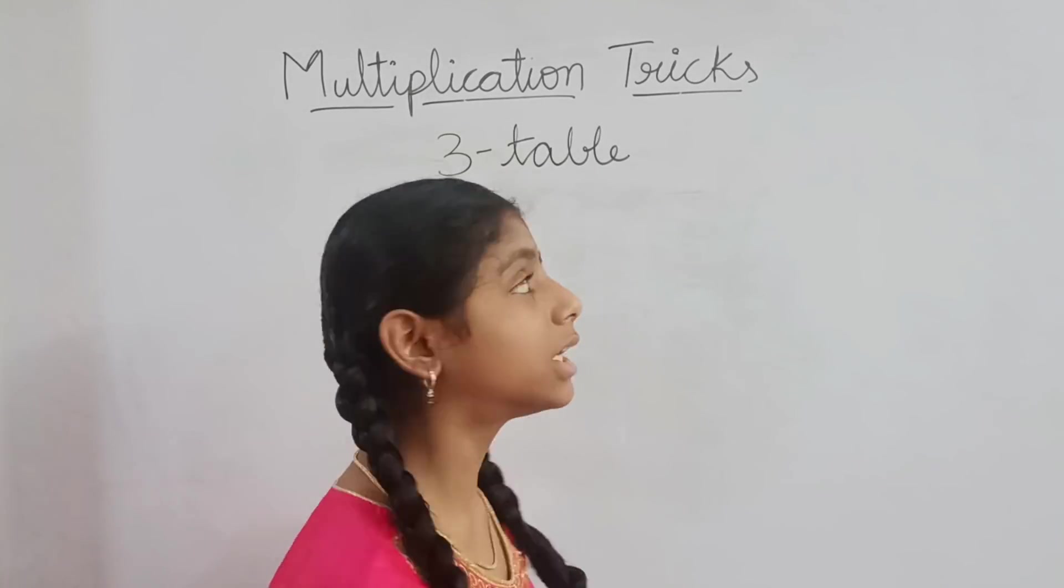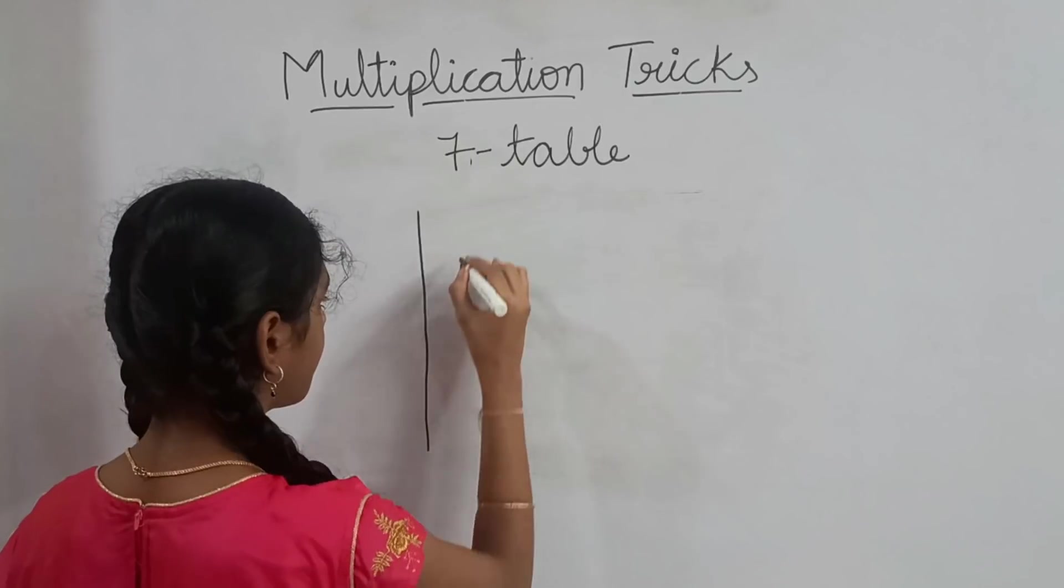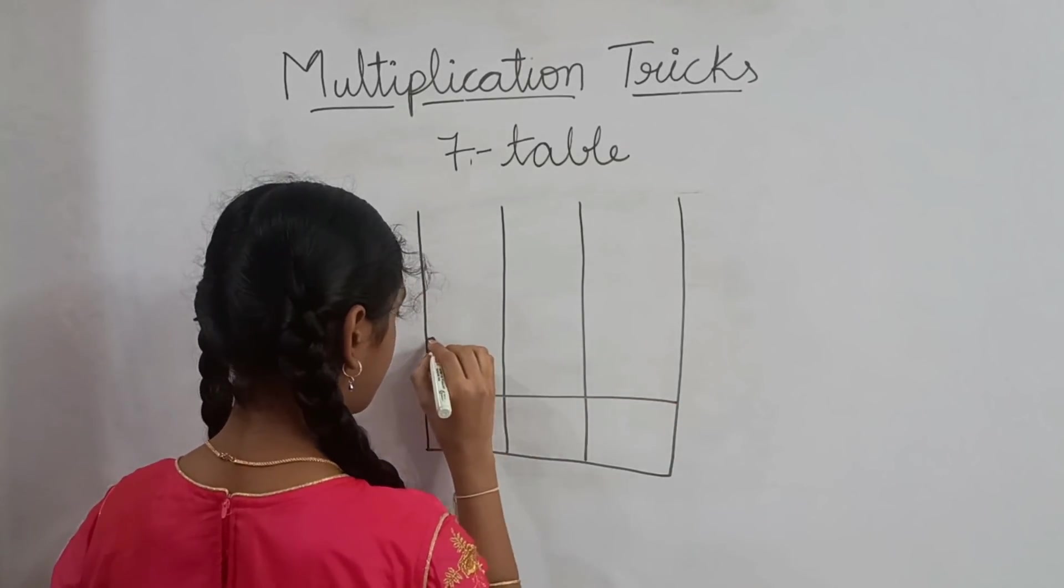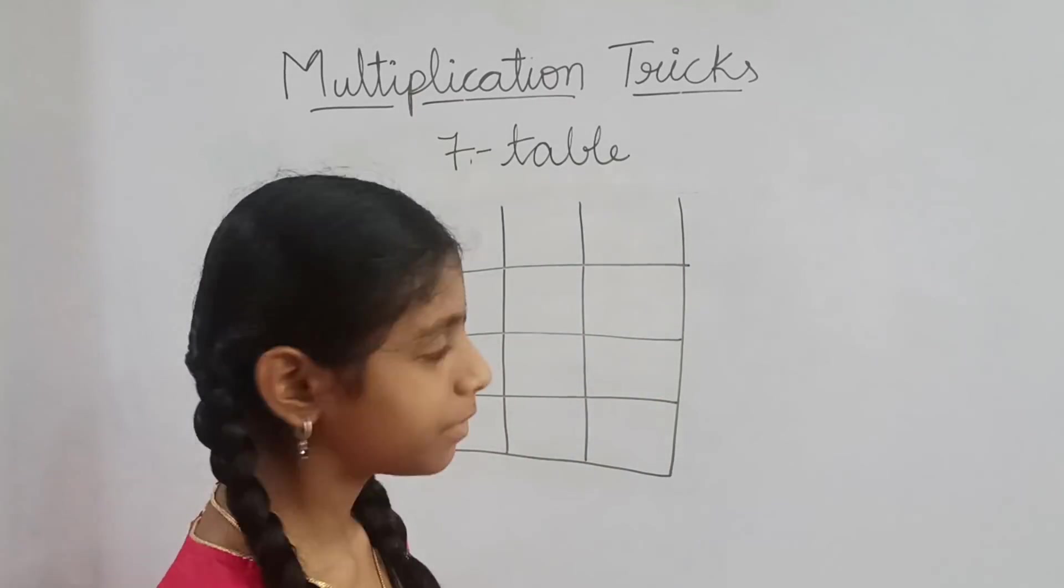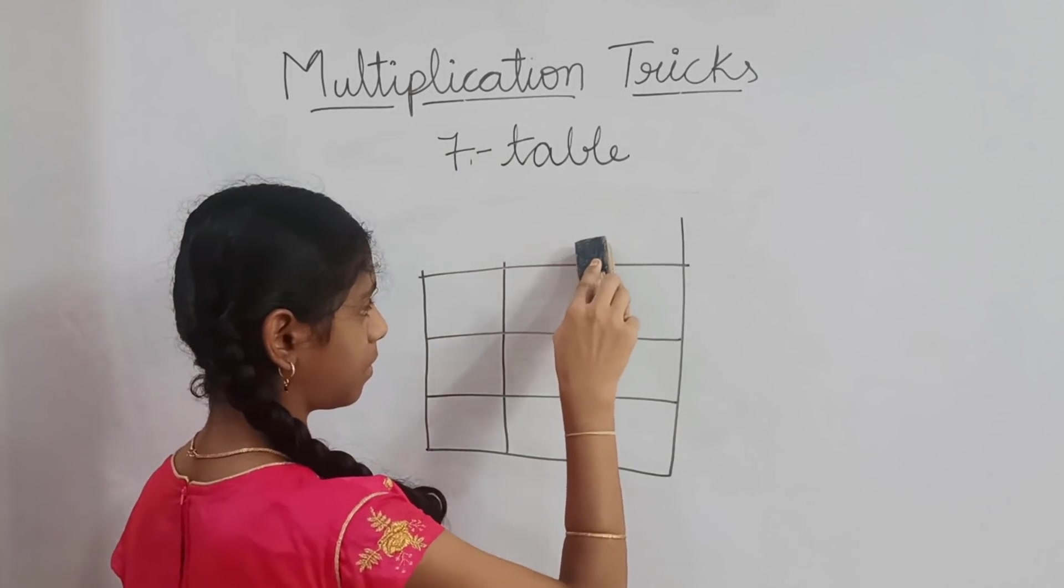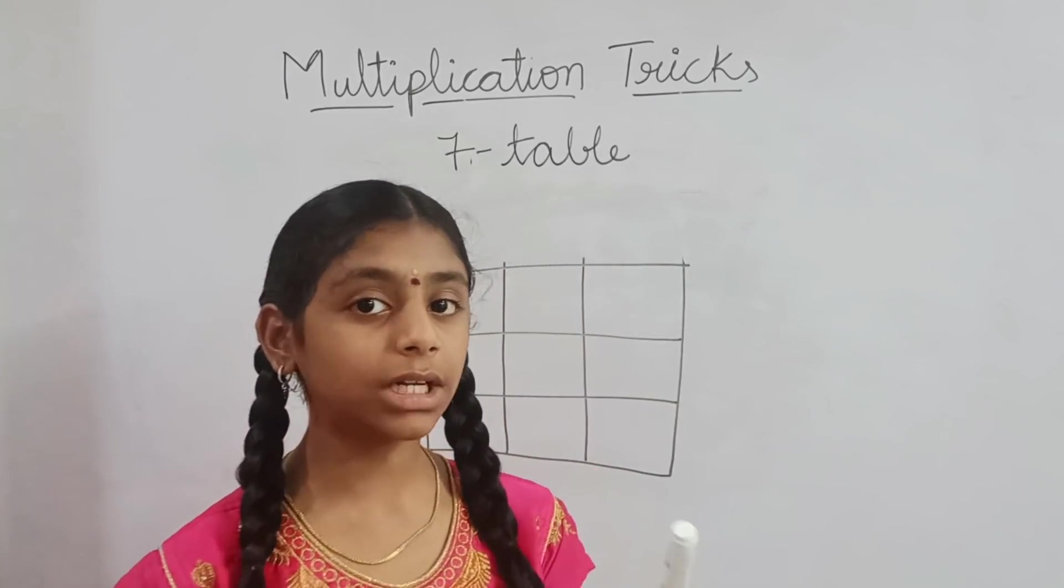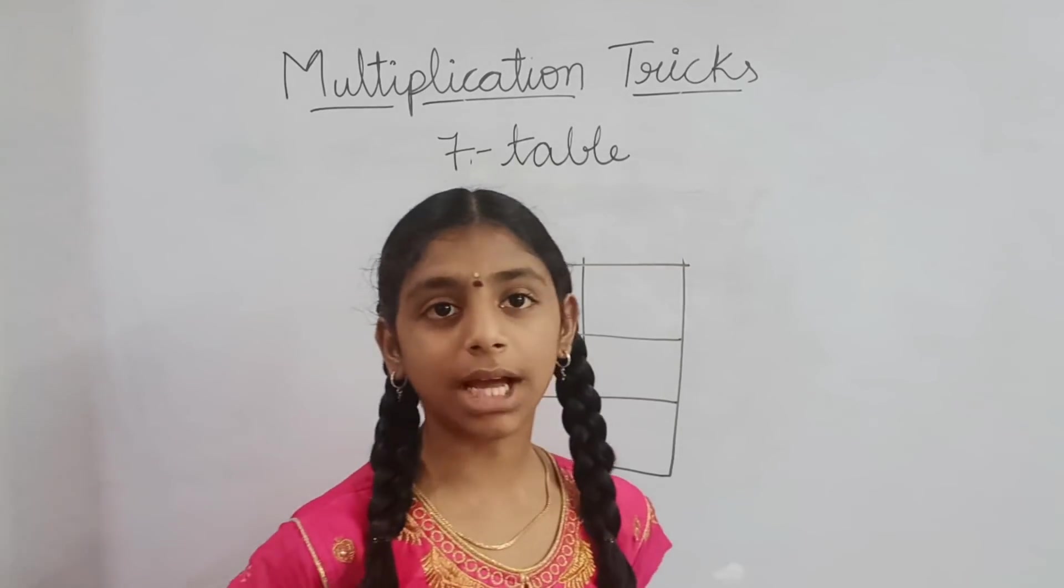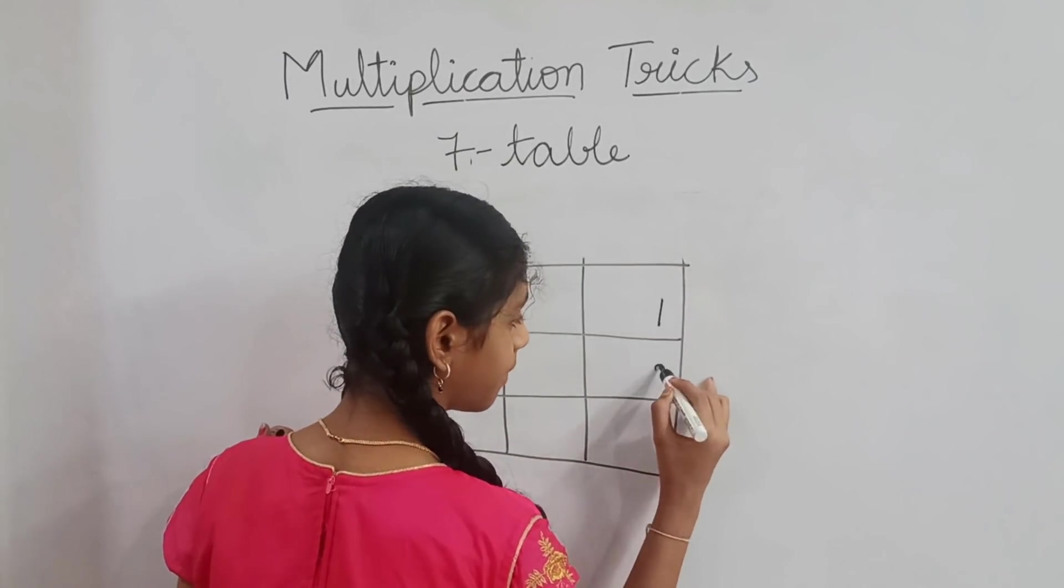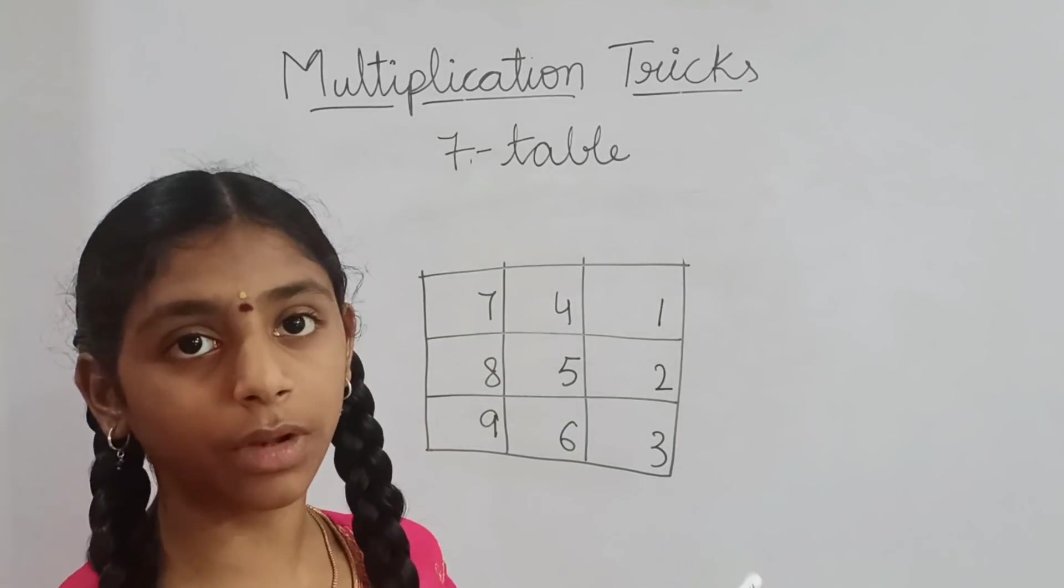For this 7 table trick also, we need a square grid as 3 table trick. We need a square grid again for 7 table trick. In 3 table, we wrote 1 to 9 numbers from left side bottom to top. Whereas, coming to 7 table, the order of writing numbers will be changed like this. The numbers will be changed in the order.